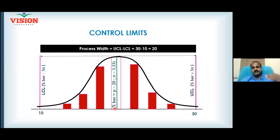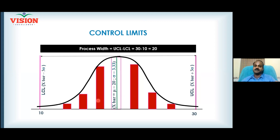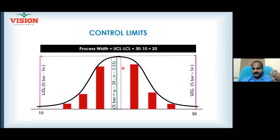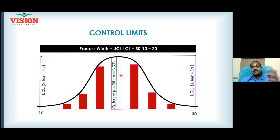Even though the average is 20 minutes and you're on target, some deliveries take more than 20 minutes and some are completed before 20 minutes — there is variation. In order to understand the amount of variation, you need to calculate standard deviation. You have 100 data points, so you can calculate sigma. That sigma is calculated to be 3.33.